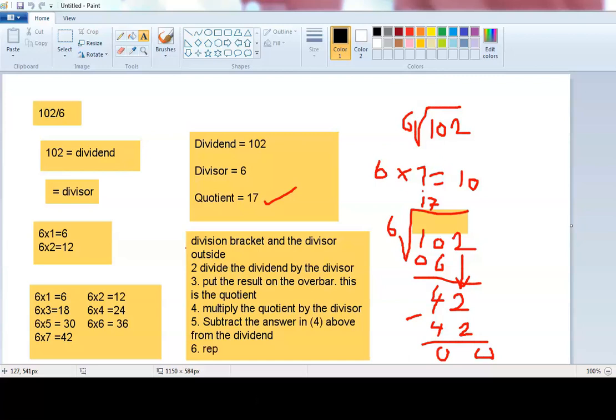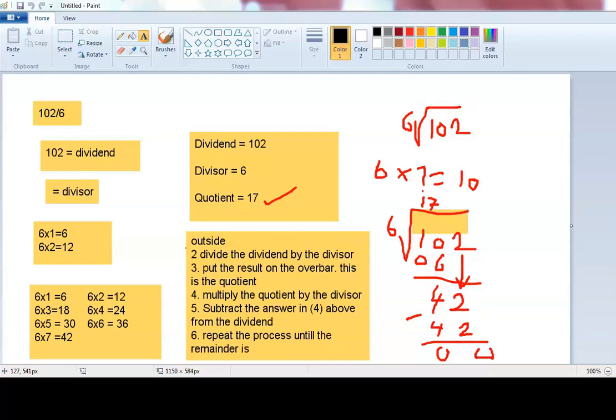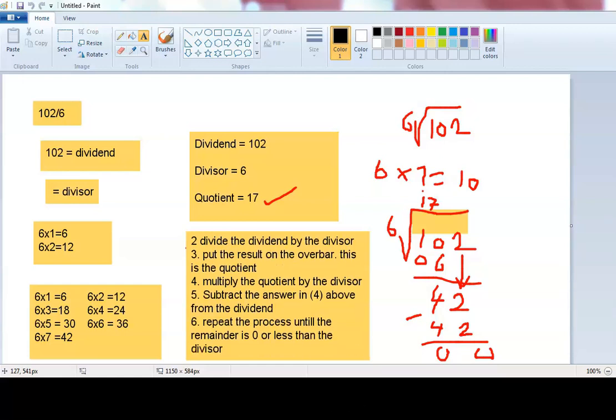Repeat the process. You repeat steps 1 to 5 until you have a remainder of 0 or a remainder less than the divisor. In subsequent videos, we are going to look at more complex examples.